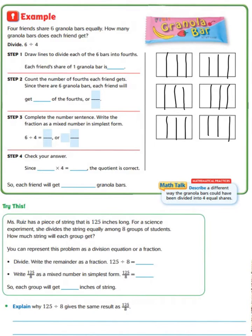Each friend's share of 1 granola bar — since there are 4 friends — is 1 piece each: 1 piece for friend 1, friend 2, friend 3, and friend 4. So each friend's share of 1 granola bar is 1 fourth. Step 2 says to count the number of fourths each friend gets. Since there are 6 granola bars, each friend will get...